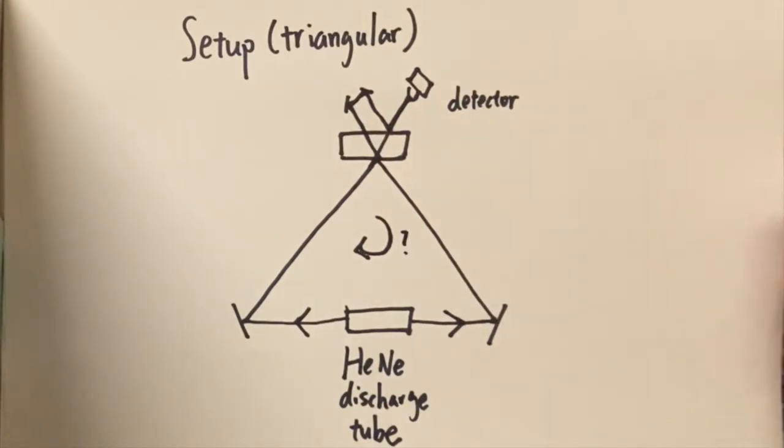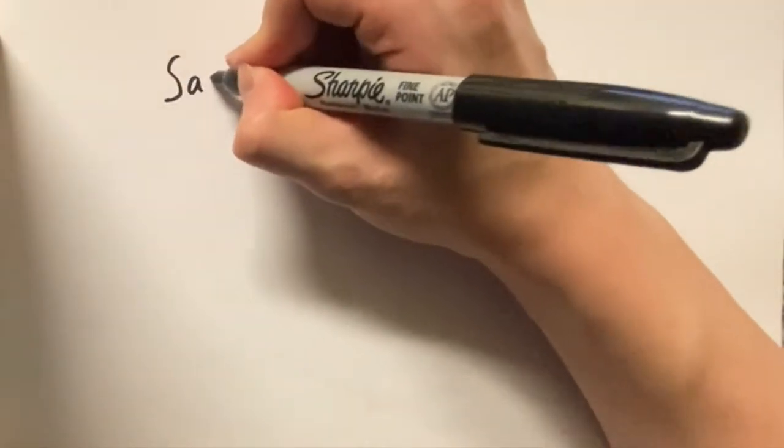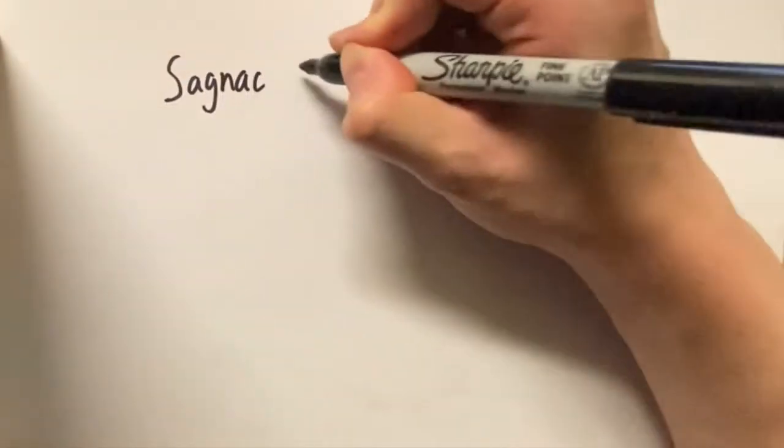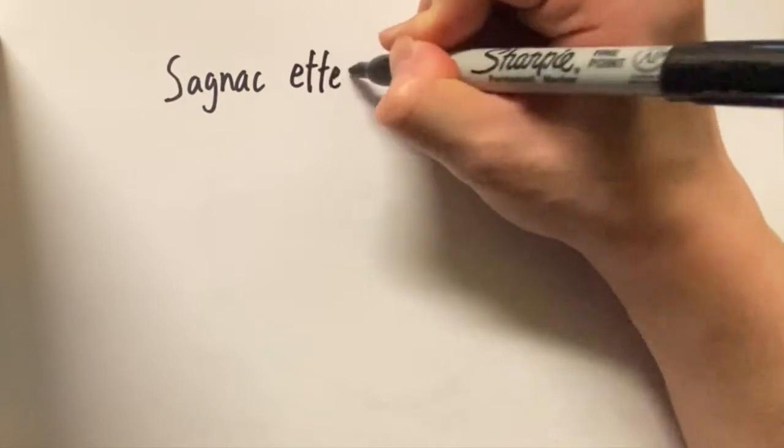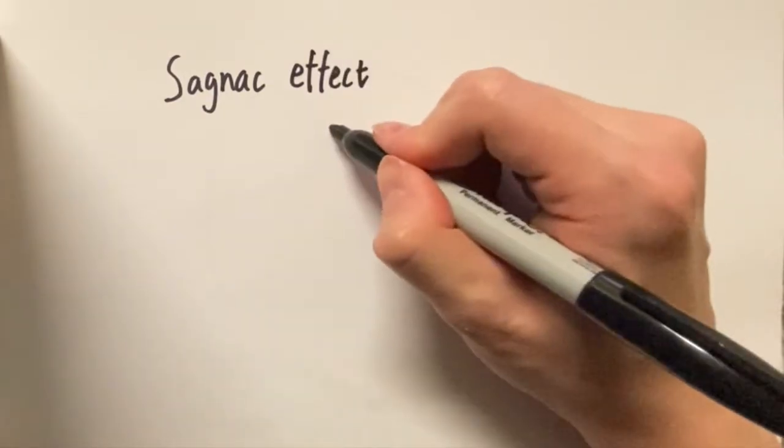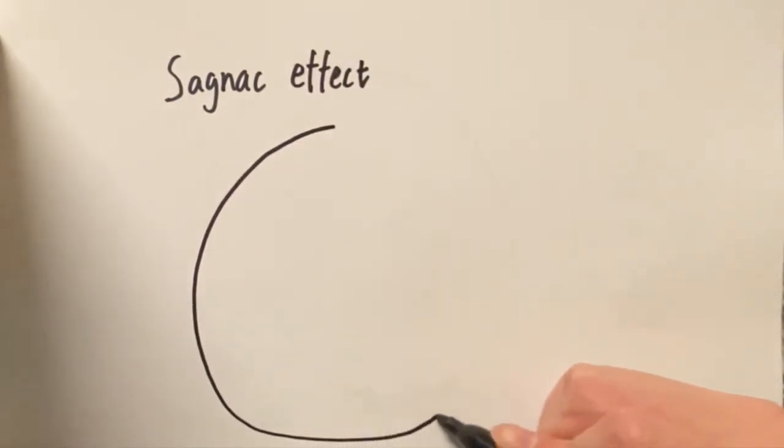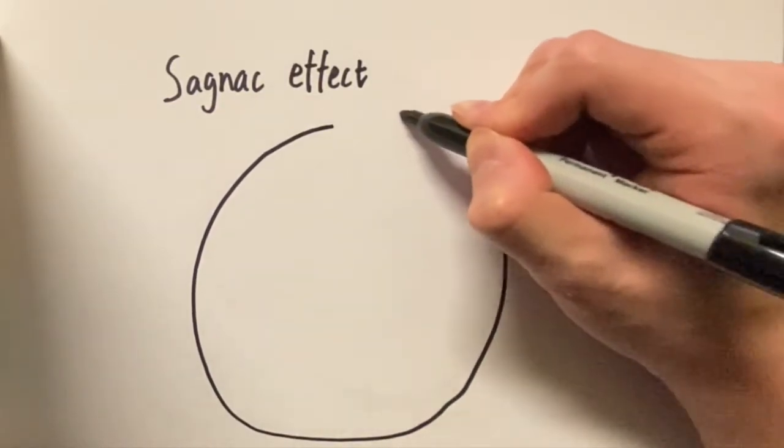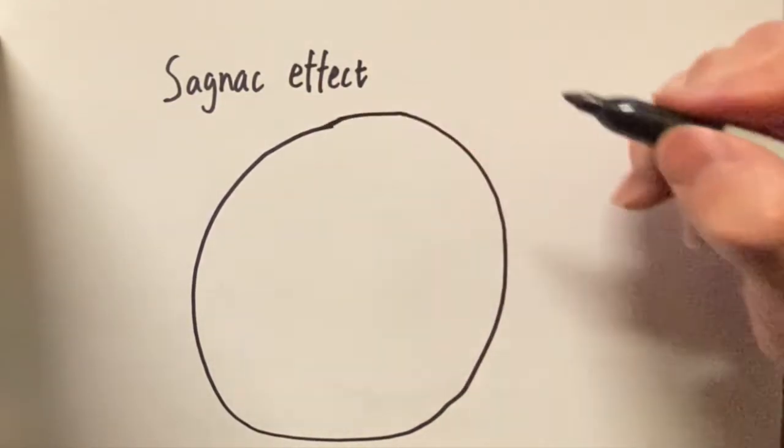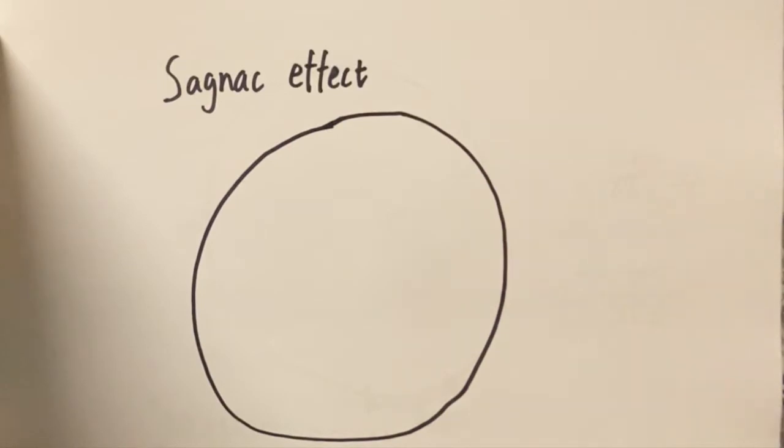But what happens if there is angular rotation? Here comes the Sagnac effect. We have a ring with radius r and refractive index n. By the way, ring laser gyroscope can be a square, a triangle, a circle, or various shapes. But it's easier to illustrate this if we have a circle.